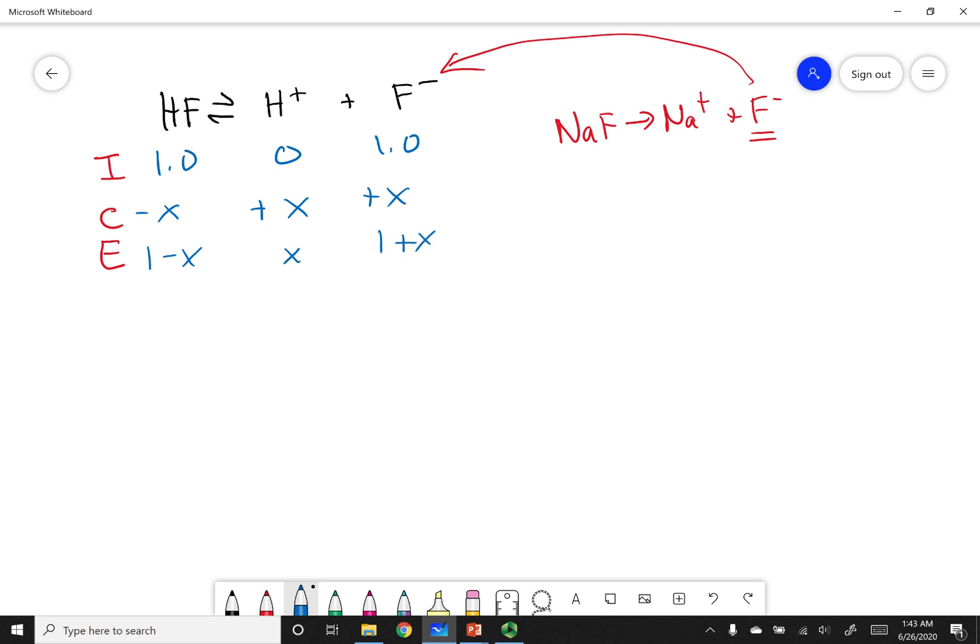Let's do the same thing we did last time, which was we looked up our Ka value. That's going to be the same: 7.2 times 10 to the negative 4th. This equals my products, so x times (1 plus x), and then (1 minus x) on the bottom. Again, my Ka looks really small. So I'm going to make the assumption that anytime I add or subtract an x, that is insignificant. So I have x times 1 divided by 1.